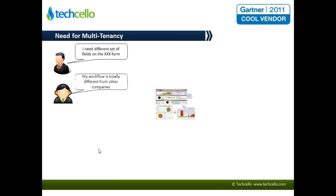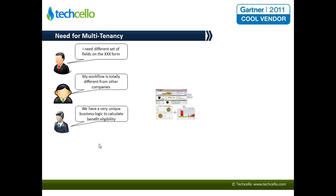Another customer may say the workflow you are following doesn't work for them because their company's workflow is totally different. A third scenario could be another customer saying the business logic — for example, to calculate benefit eligibility, number of leaves available, or sales commission — is completely different for them. This is not a simple scenario, because sometimes the requirements of these customers can totally vary and even contradict each other. For instance, the way you calculate benefit eligibility for one customer could be in total contradiction to how you do it for another.